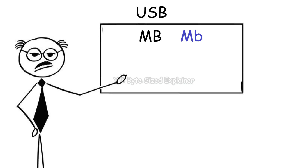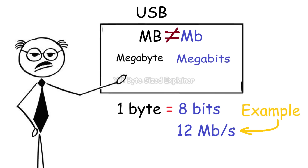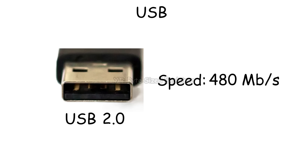Just to make it clear why it's slow: many people confuse megabits with megabytes, but they're actually not the same. One byte is 8 bits, so speeds written in megabits per second are actually around 8 times smaller when converted to megabytes per second. Anyway, the standard these days is USB 2.0, which goes up to 480 megabits per second and usually comes in black.